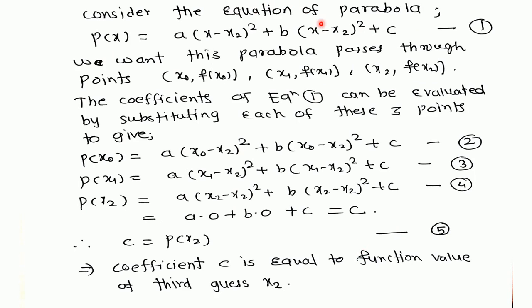Consider the equation of parabola through point x2. We want this parabola passes through the three points. These three points, that is x0, f of x0, x1, f of x1, and x2, f of x2, as seen in the graph.